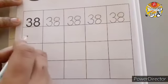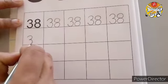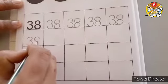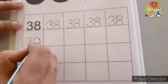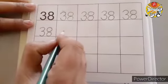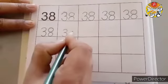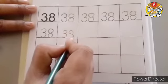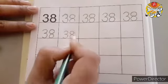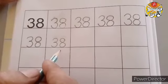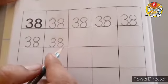Now in the next box we will write 3, 8, 38. One more time I will show you 3, 8, 38. So in this way you have to write in your textbook. Okay children.